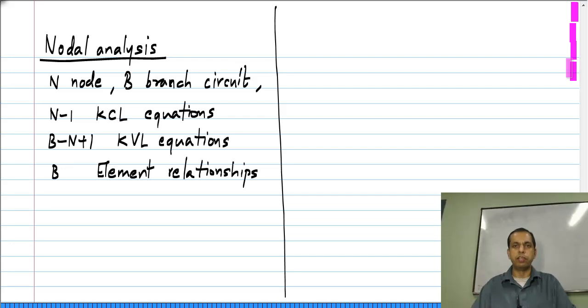And if you start with KVL equations around b minus n plus 1 loops of the circuit, it is known as loop analysis and a variant of that is called mesh analysis. We will see those things later, we will first consider nodal analysis.